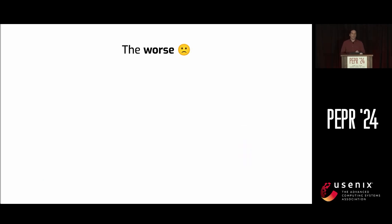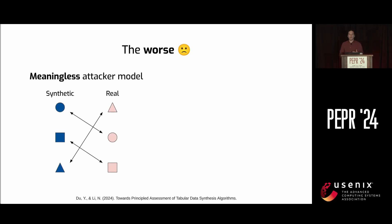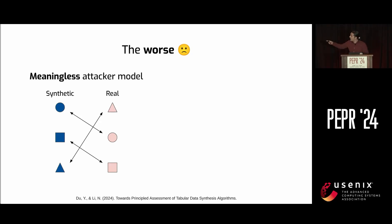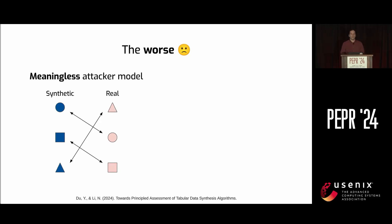There's worse — I count at least two much more profound issues. One is that similarity-based metrics assume an attacker who's trying to do something really weird. They have synthetic data points on one hand and real data points somehow on the other hand, and their goal is to link the two together. But that's not what attackers do in real life. There can be leakage even if no such link even exists. Attackers can do things like reconstruction attacks, explore the details of your algorithm, use auxiliary information — sometimes they can even influence your data. The distances we saw earlier don't model any of that.